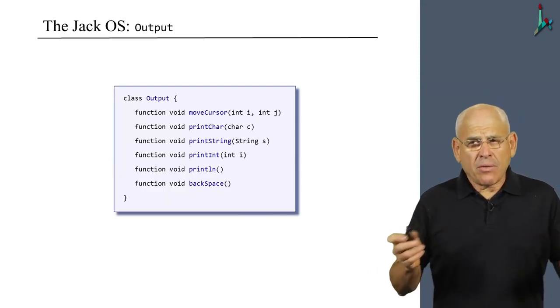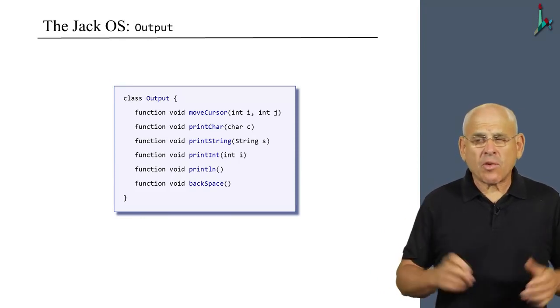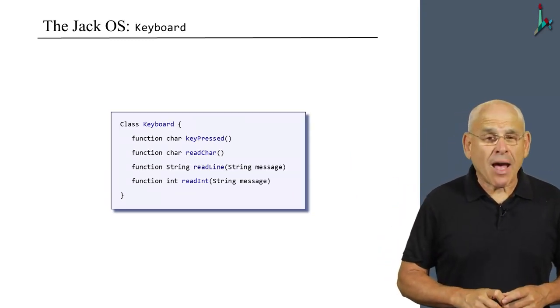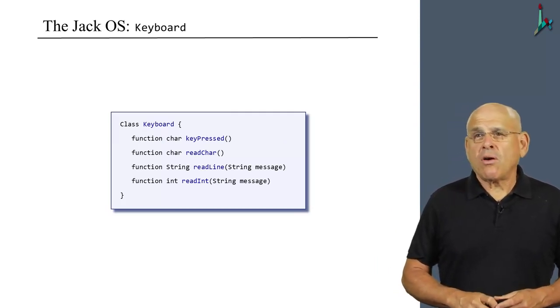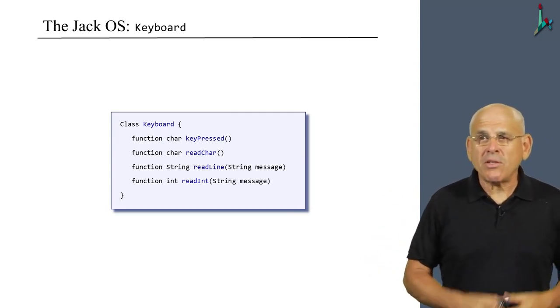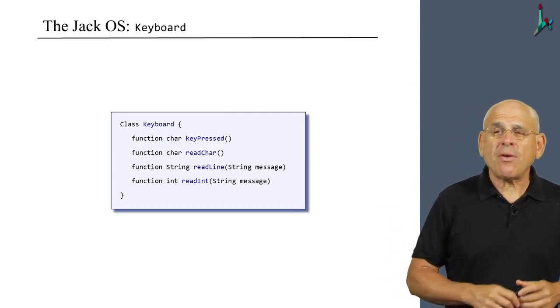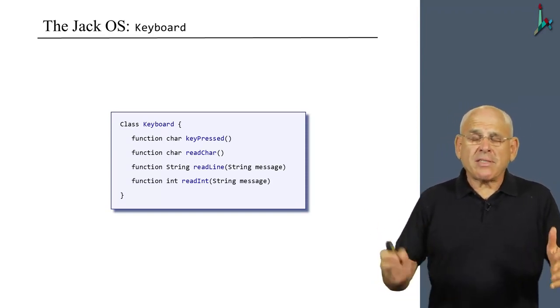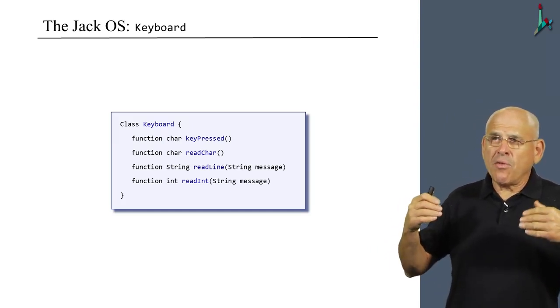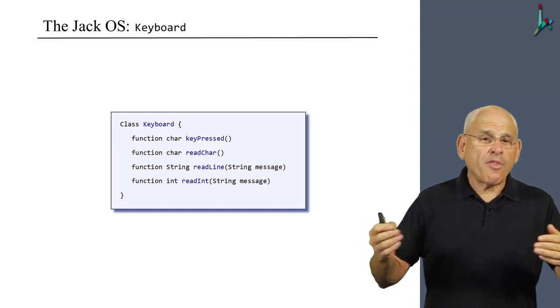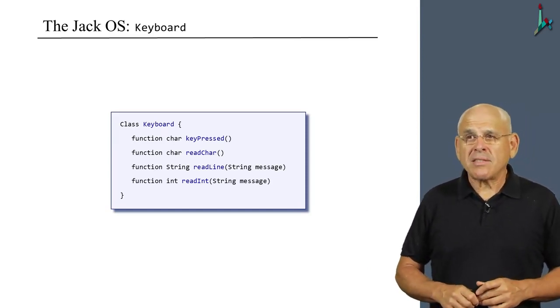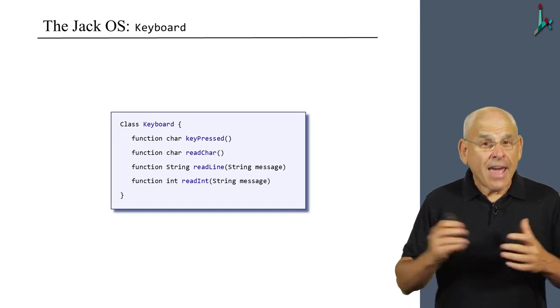The output class we saw and discussed before. Likewise, the screen was discussed and so was the keyboard. This pretty much wraps up the description of our operating system. Just like Java has a standard library that accompanies the language, this is our library, the Jack library. With the small difference that the standard library that accompanies Java contains as of 2016 about 4,000 classes. And the library that accompanies the Jack language contains as of 2016 eight classes.